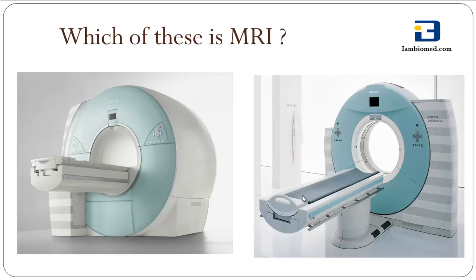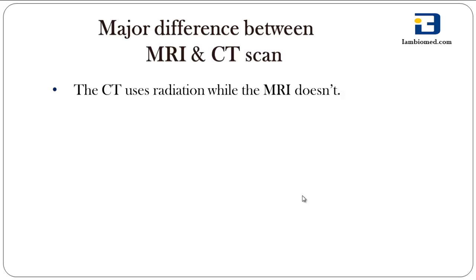The CT scan and MRI are often mistaken to be the same thing. It is quite natural to be confused between the two because the machines look very similar. However, there is a substantial difference between the MRI and CT scan. A major difference is that CT scan uses radiation while MRI scanner doesn't — MRI uses magnets.